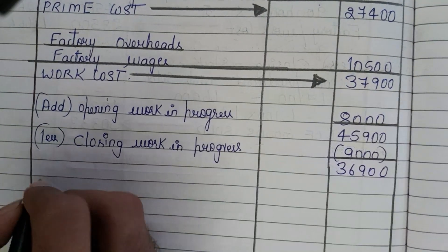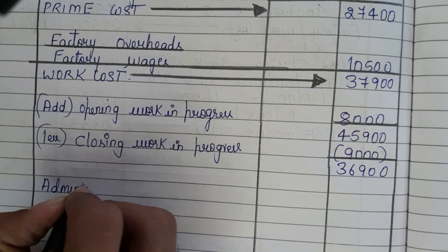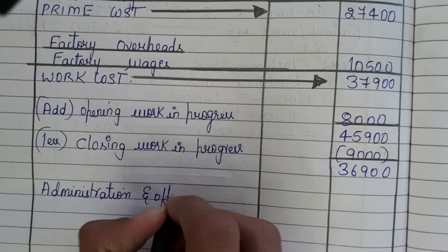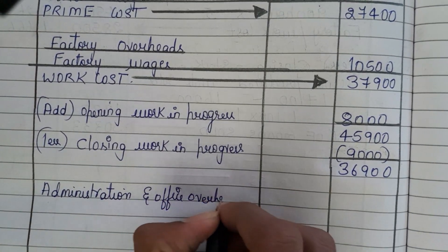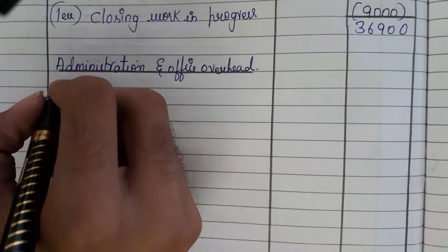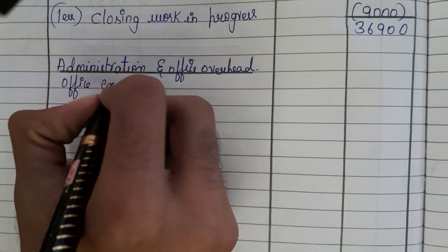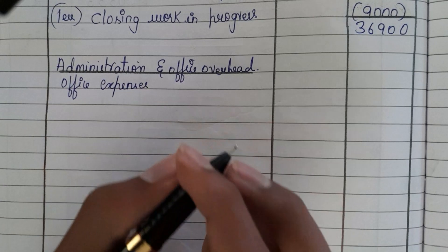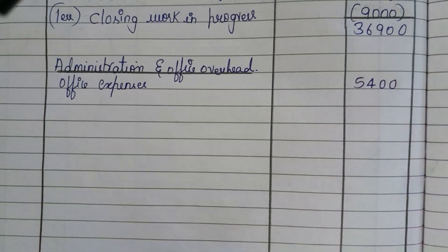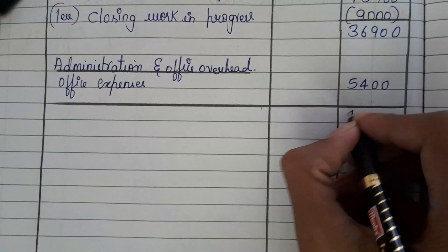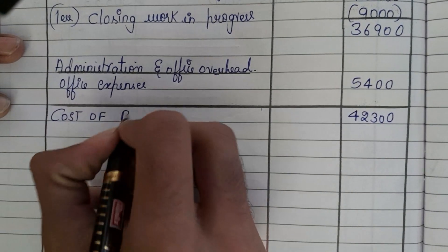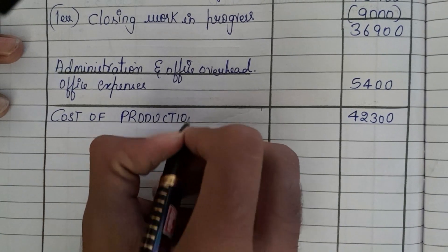Now we add administration and office overhead. The only office overhead we have is office expenses, which is 5,400. Adding 5,400 to 36,900 gives us 42,300, which is our cost of production.